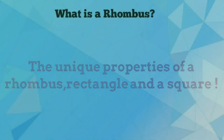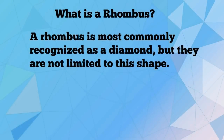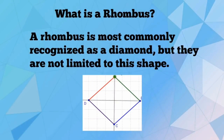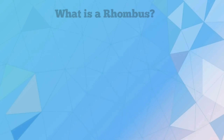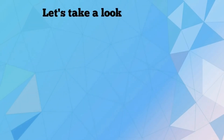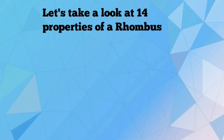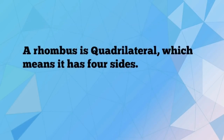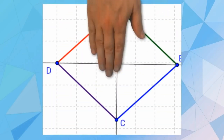What is a rhombus? A rhombus is most commonly recognized as a diamond, but they are not limited to this shape. Let's take a look at 14 properties of a rhombus. A rhombus is a quadrilateral, which means it has four sides.